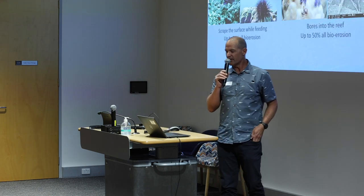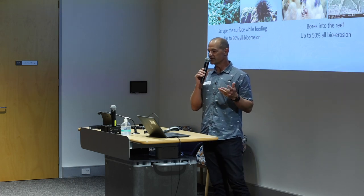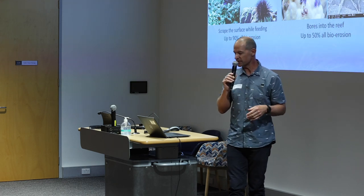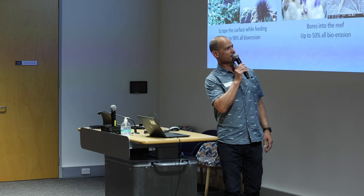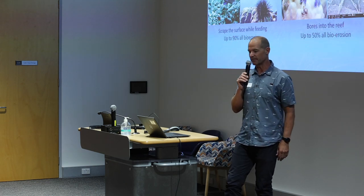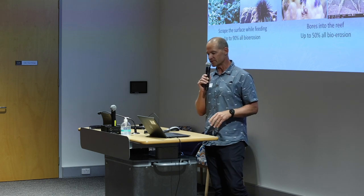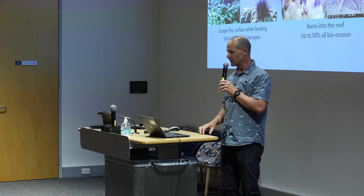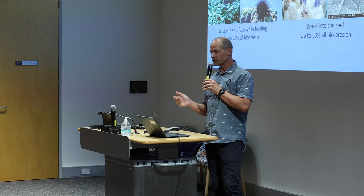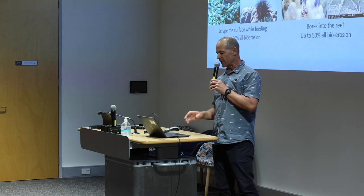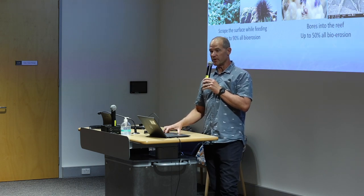Bio-erosion can be broken down into external versus internal. External bio-erosion is generally due to parrotfish and urchins — as they feed on and move across the reef surface they erode it through mechanical and chemical processes, accounting for about 90% of all bio-erosion. In contrast, internal erosion is due to organisms that bore into the reef and can account for up to about 50% of all bio-erosion.